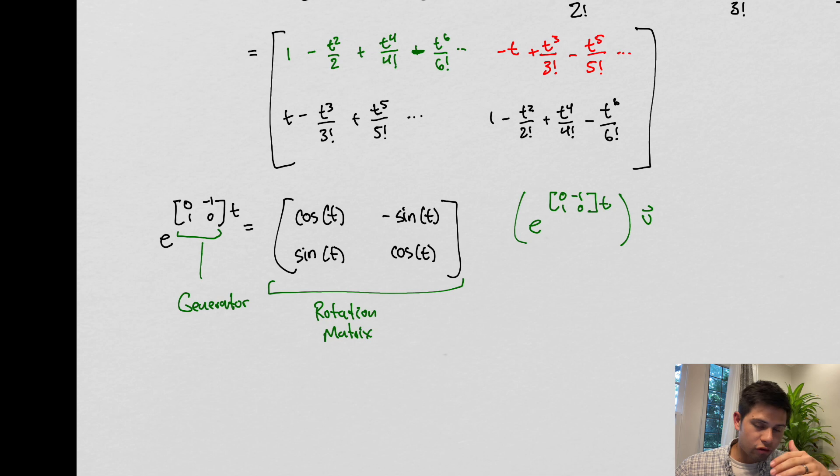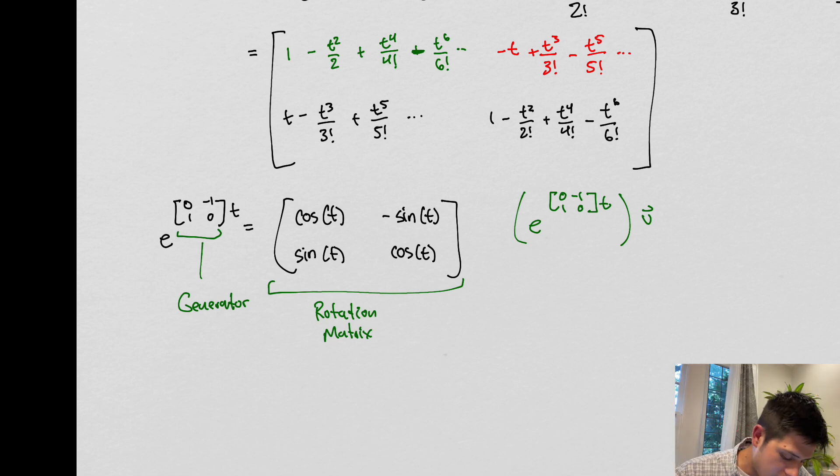You can, I would strongly encourage taking this idea and trying it for other matrices. Try it for another matrix that maybe would look like something like this, maybe zero, one, negative one, one. See what type of rotation matrix that would result in.